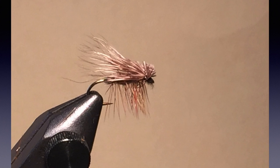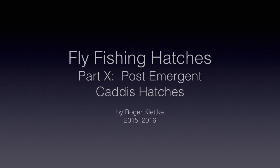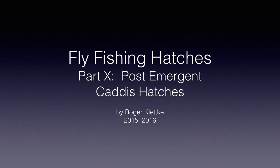Skittering an elk hair caddis during a caddis hatch when the adults are running across the surface makes sense because the motion is probably the strong trigger, but that doesn't explain my limited success when I used to fish an elk hair caddis during this hatch. I suspect some trout do take adults during the hatch. Many caddis that emerged a day or so before return to lay their eggs, often during the same time as the new emergence. For the surfaced egg layers, an elk hair caddis is a good imitation — perhaps I was actually fishing a post-emergence egg-laying hatch at the same time. Join us next time when we'll discuss the post-emergence caddis hatches and tie appropriate flies. I'm Raj Kletke, and I'll see you soon.